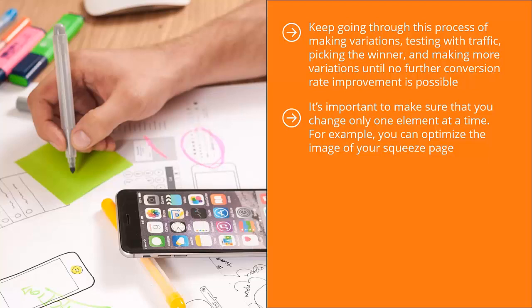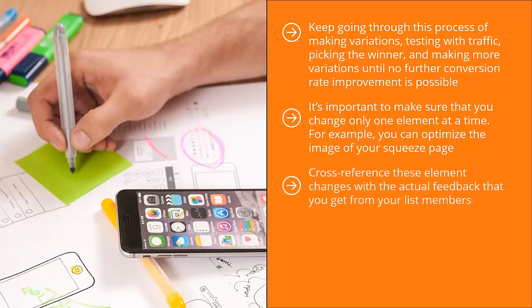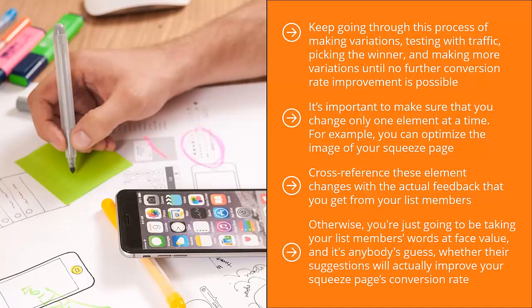Move from one element at a time until the squeeze page converts at a fairly high and predictable rate. Cross-reference element changes with the actual feedback you get from your list members. Using these two pieces of data, you should be able to come up with a statistics-driven modification strategy — otherwise you're just taking your list members' words at face value, and it's anybody's guess whether their suggestions will actually improve your squeeze page's conversion rate.